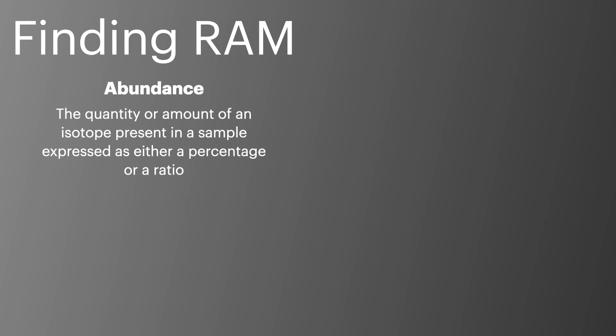When it comes to calculating the relative atomic mass, we need to look at the abundances of each isotope present. The abundance is the quantity or the amount of an isotope present in the sample, and can be shown as either a percentage or as a ratio.